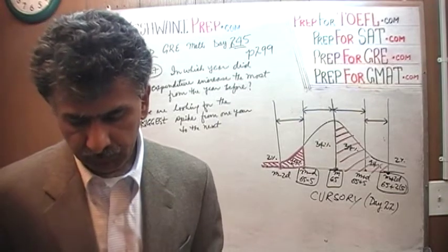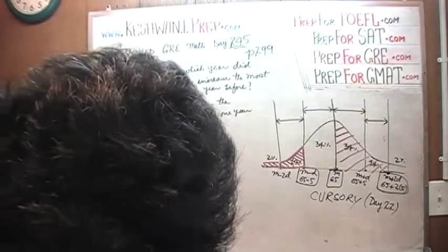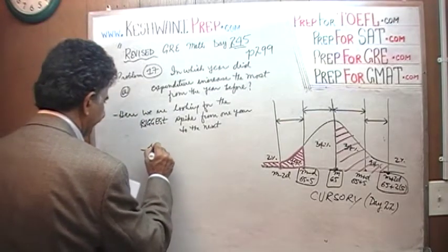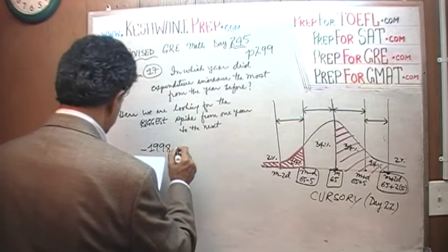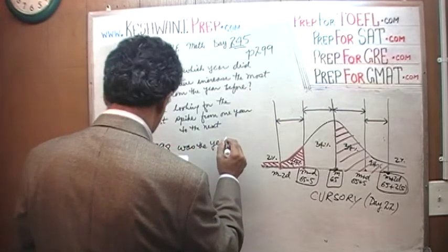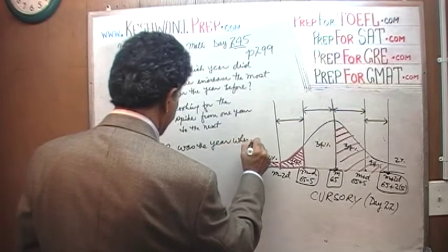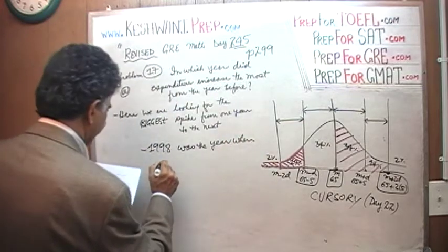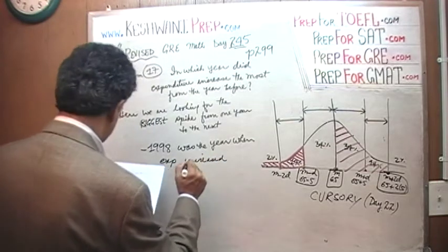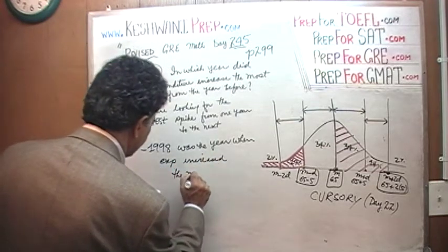And the biggest spike that you see there, if you look carefully, you will see that it happens 1998. 1998 was the year when expenditure increased the most.